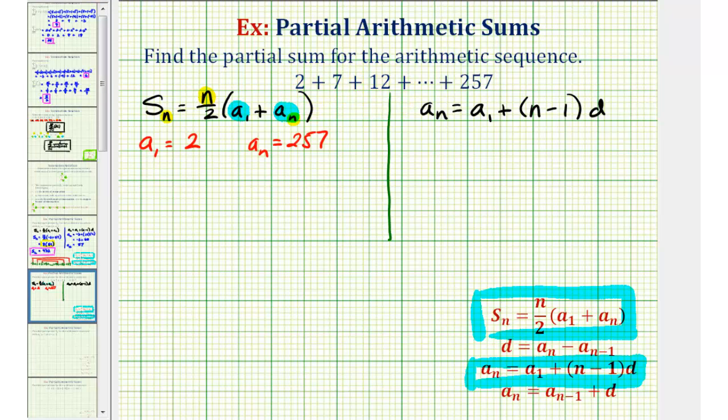Well hopefully we can take a look at this and notice that we're adding five each time. Two plus five is equal to seven, seven plus five is equal to twelve, and so on. Therefore our common difference d is equal to five.